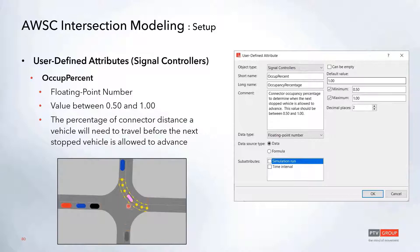For example, if you have this set to 0.5, once this vehicle travels halfway through that connector, then the next vehicle will be allowed to advance. Whereas if you have this value set to 1, then all the other vehicles will wait until that current vehicle travels all the way through that connector before they will be allowed to advance. So this is just a way that you can do a little bit of calibration for each of these intersections.